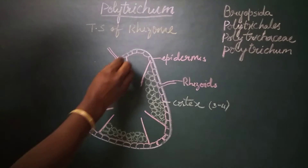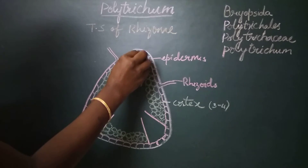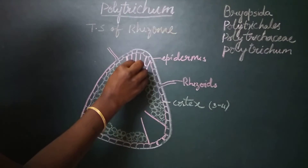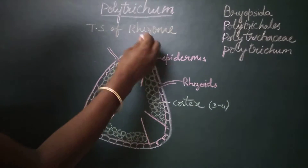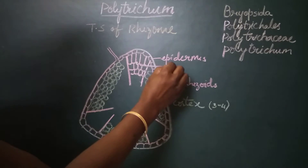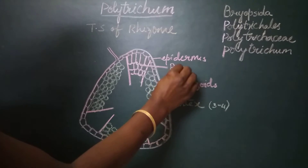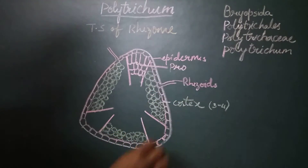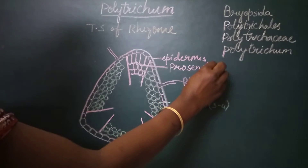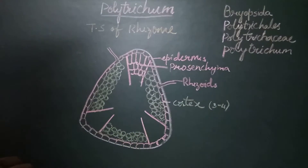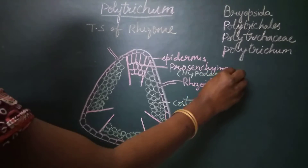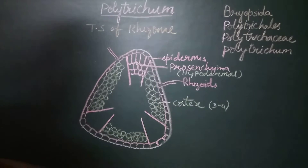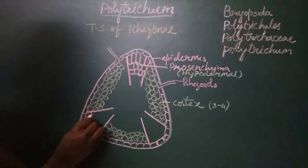The radial strands are made up of hypodermal cells towards the epidermis. These hypodermal strands, towards the outer surface or towards the epidermis, have thick-walled cells with tapering ends. These cells are called prosenchyma cells. The prosenchyma tissue forms the hypodermal region. The prosenchyma cells are elongated, thick-walled, and have tapering ends.